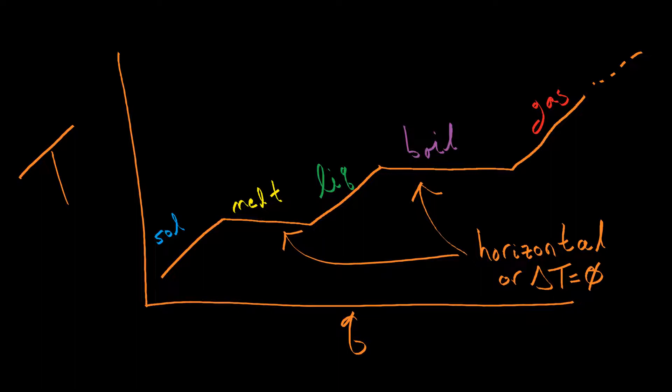An ice cube, even as it's melting, is always going to be zero degrees, until it's done melting. Then, the temperature will go up. Similarly, boiling water, it's going to be 100 degrees Celsius, full stop. It's not going to change until all the water has boiled off.